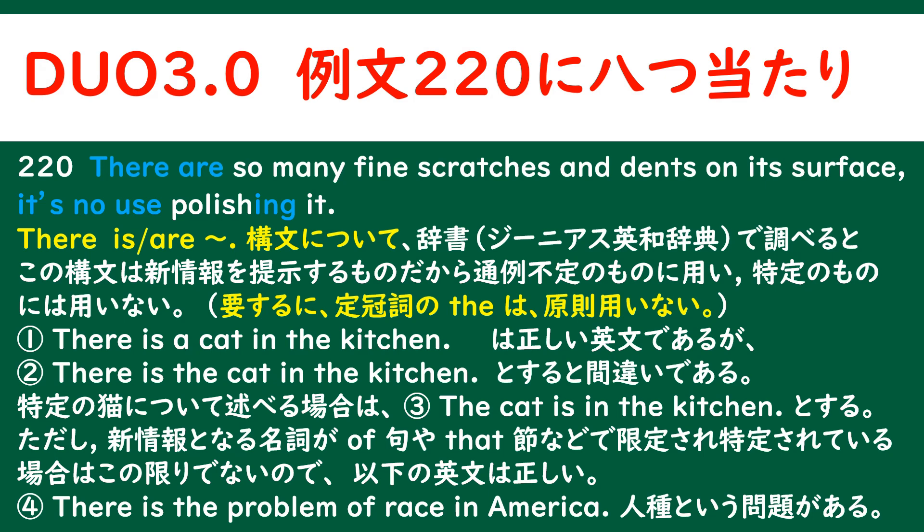で、例文があるんですが、①番はこれは正しい英文なんですが、②番のように「There is the cat in the kitchen」とすると、間違いということになっています。で、特定の猫、その猫について述べる場合は、③のような「The cat is in the kitchen」とすれば問題ないわけです。